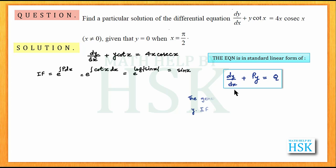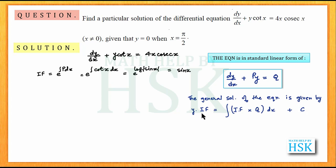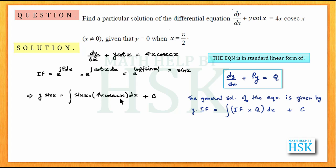Now, using the solution of the linear form of the differential equation directly, we write the solution of this differential equation as y into sin x is equal to the integration of sin x into 4x cosec x dx plus c. So y into integrating factor equals the integral of integrating factor into Q plus c. This can be simplified: the sin x and cosec x cancel out, so I get y sin x is equal to integral of 4x dx plus c.